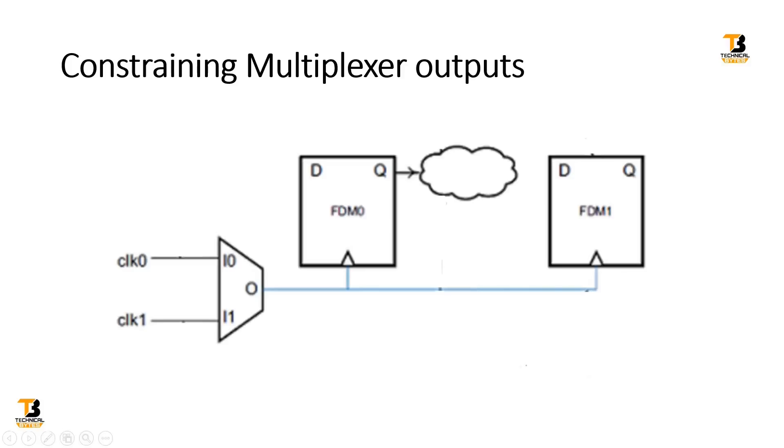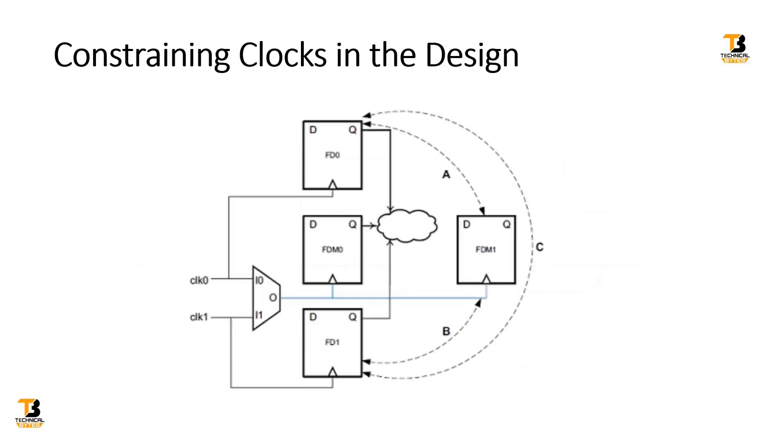Now let's see our next challenge. We have two clock inputs, clock zero and clock one, both going to the multiplexer input. With this multiplexer, we can pass either clock zero or clock one. The output of the multiplexer goes to FDM0 and FDM1, similar to challenge one.